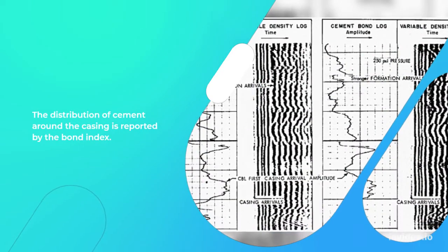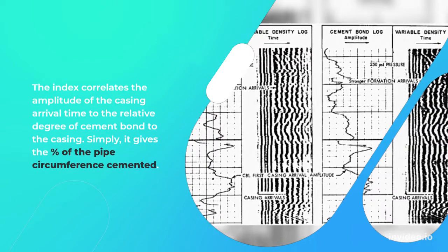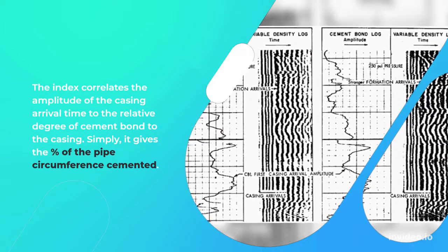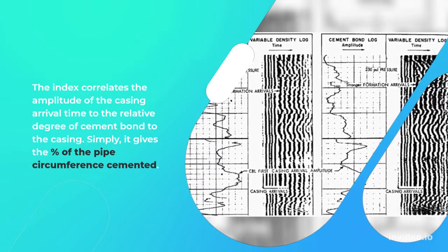The distribution of cement around the casing is reported by the bond index. The index correlates the amplitude of the casing arrival time to the relative degree of cement bond to the casing. Simply, it gives the percent of the pipe circumference cemented.